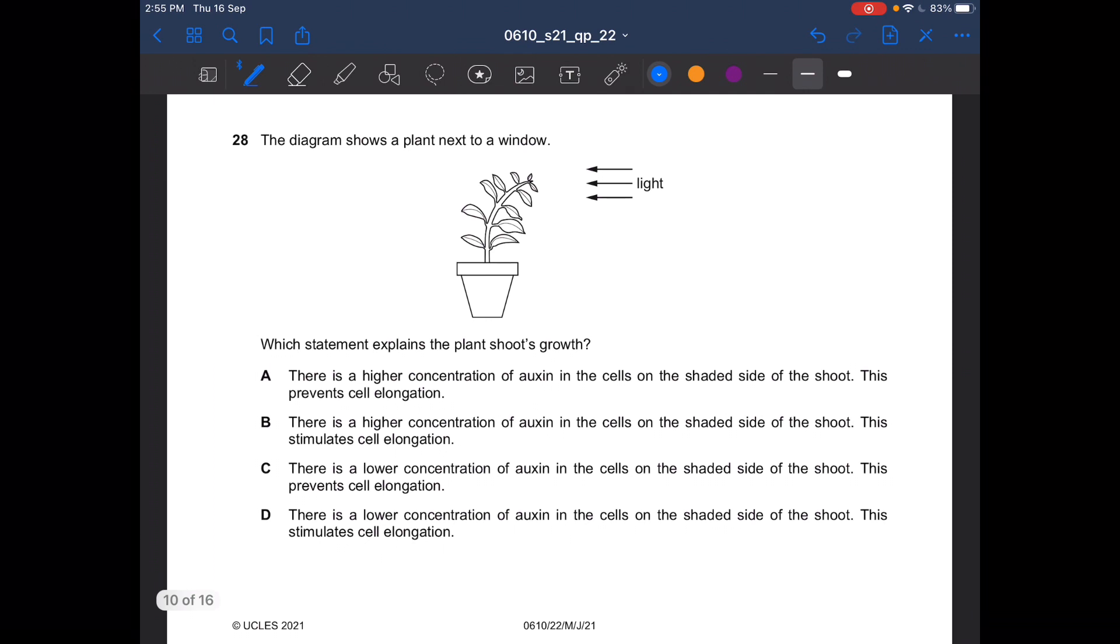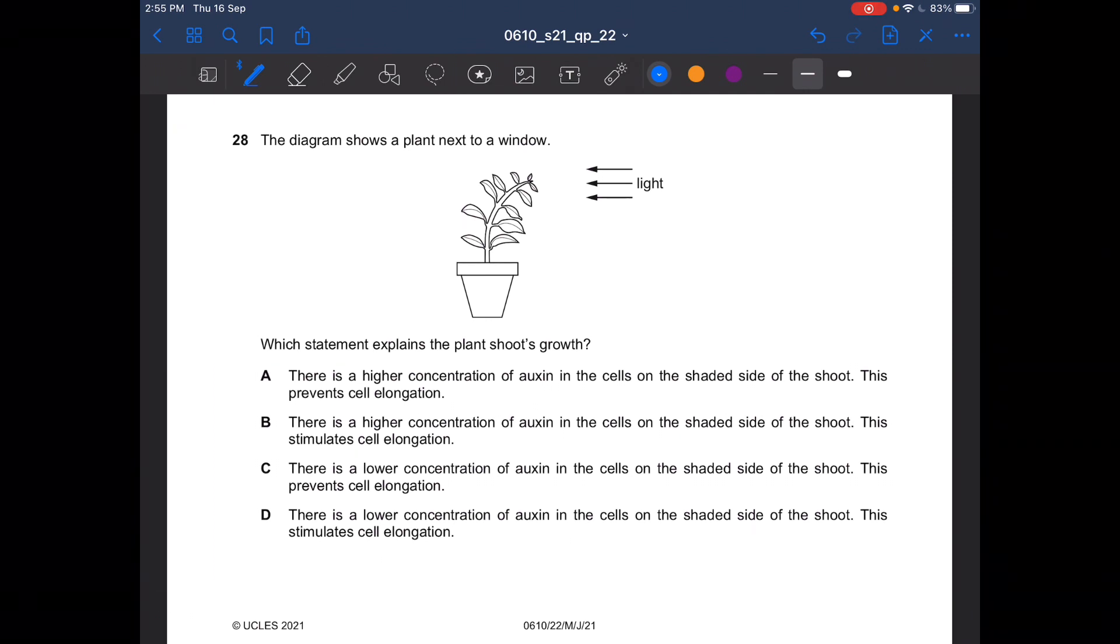Next question. The diagram shows a plant next to a window. Which statement explains the plant shoot's growth? Auxin. There should be higher concentration of auxin over here. So the answer can't be C, it can't be D. And auxin stimulates cell elongation. So the answer is B.